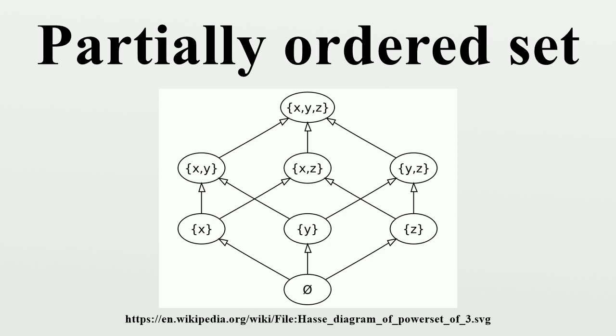Orders on the Cartesian product of partially ordered sets: In order of increasing strength, i.e., decreasing sets of pairs, three of the possible partial orders on the Cartesian product of two partially ordered sets are: The lexicographical order, if A < C or (A = C and B < D); The product order, if A ≤ C and B ≤ D; The reflexive closure of the direct product of the corresponding strict orders, if (A < C and B < D) or (A = C and B = D). All three can similarly be defined for the Cartesian product of more than two sets. Applied to ordered vector spaces over the same field, the result is in each case also an ordered vector space. See also orders on the Cartesian product of totally ordered sets.